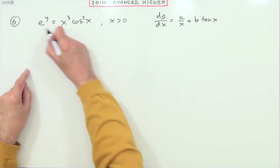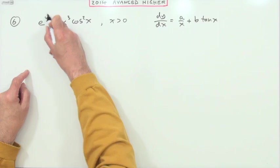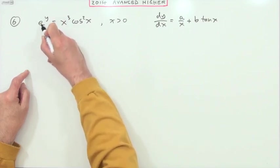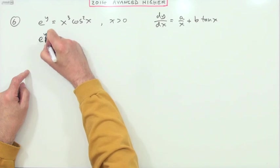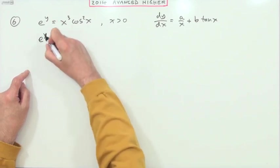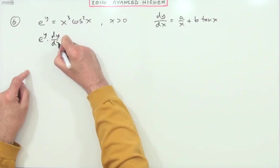So differentiate both sides. Function of a function - differentiating the function e to the anything produces e to the thing multiplied by the derivative of the thing it's acting on, so dy/dx.